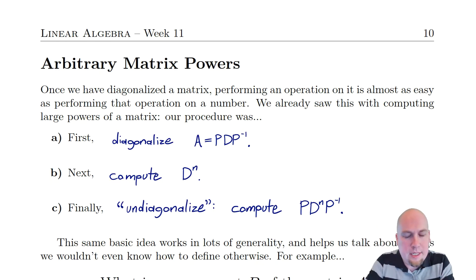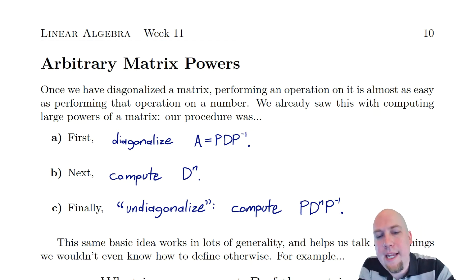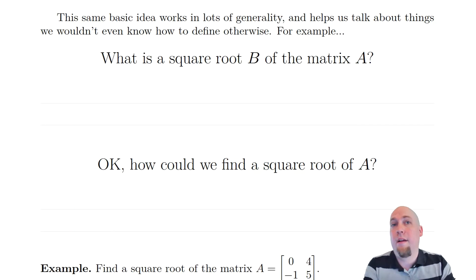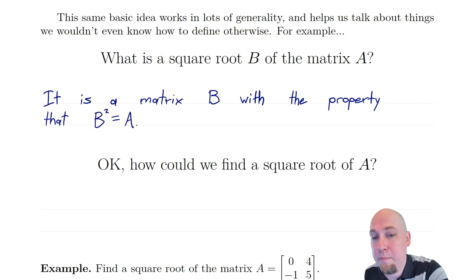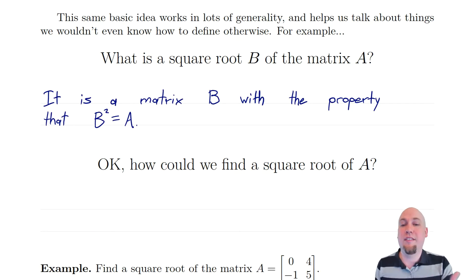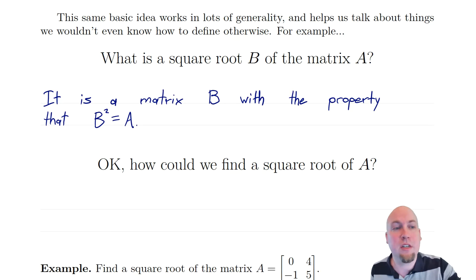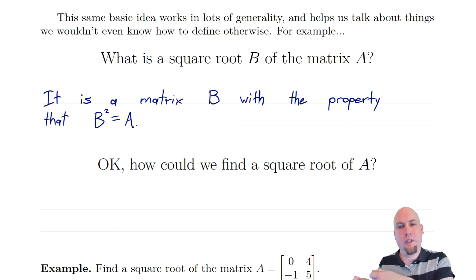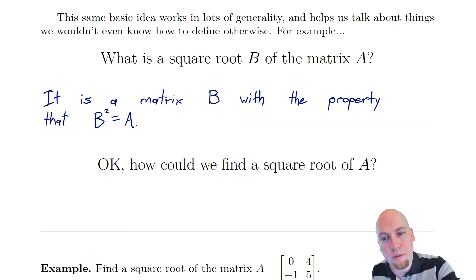So let's see how this works if we wanted to find a square root of a matrix. What does it mean to find a square root of a matrix? It means find a matrix that squares to the original matrix. So if I started off with a matrix A and said find me a square root B of A, that means find a matrix B with the property that B squared equals A, because then B is the square root of A.